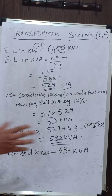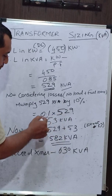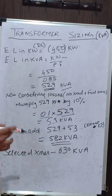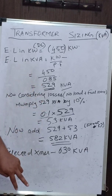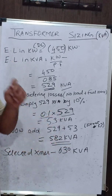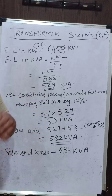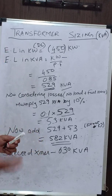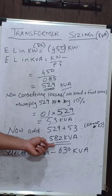For proper design, you must account for losses upfront. Multiply the existing 529 kVA by 10%, which gives 53 kVA. Add this 53 kVA to the original 529 kVA, giving a total of 582 kVA. This means a 582 kVA transformer will be sufficient to feed a load of 529 kVA while also covering the losses — since 53 kVA is absorbed by transformer losses.